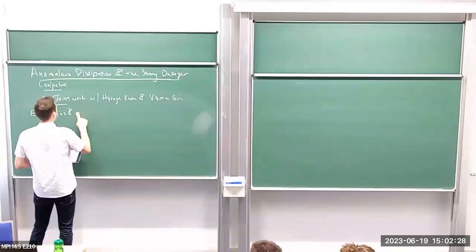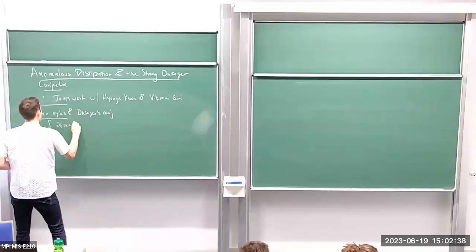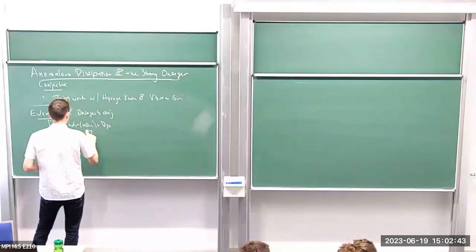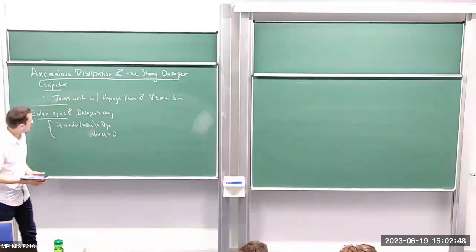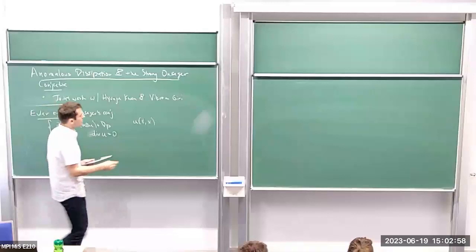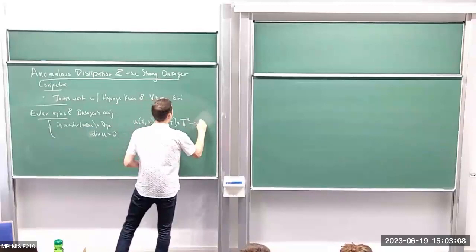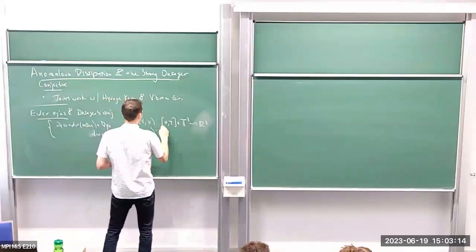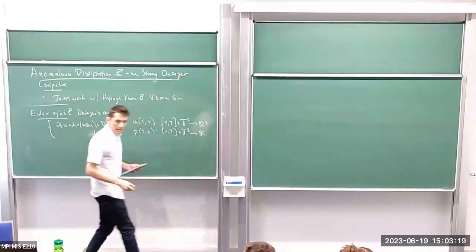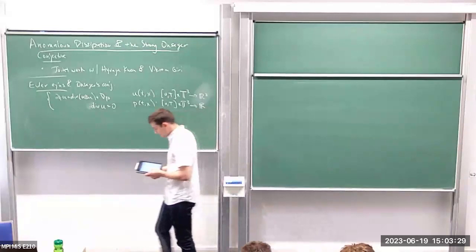Let's set the stage. I have two equations for the unknowns, which throughout this week will always be a velocity field whose domain is some collection of times times the periodic three-dimensional torus — so always three dimensions. The pressure is defined similarly but is a scalar function. These equations model ideal incompressible flow for a fluid of constant density.